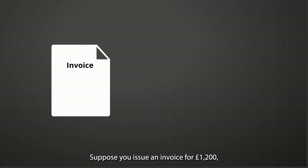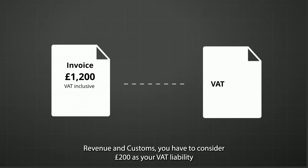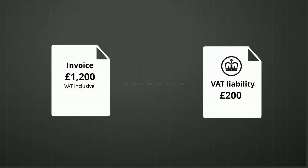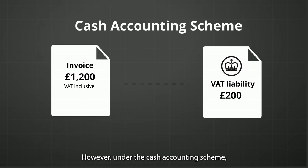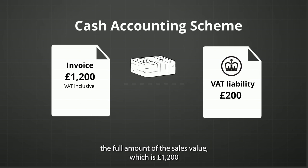To further understand, let us give you an example. Suppose you issue an invoice for £1,200, including VAT, to be paid by the customer at a later date. Typically, under the normal VAT requirement by HM Revenue and Customs, you have to consider £200 as your VAT liability regardless of whether you have received payment from your customer. However, under the cash accounting scheme, you are only obligated for the £200 once you have received the full amount of the sales value, which is £1,200.